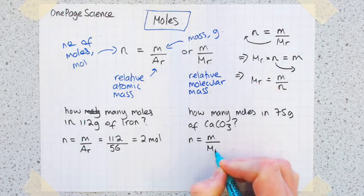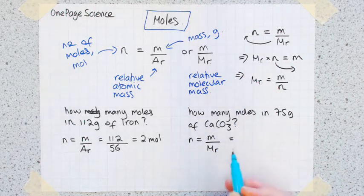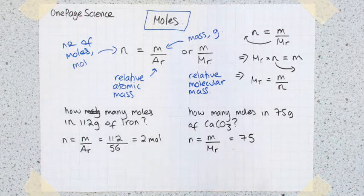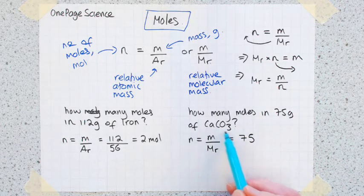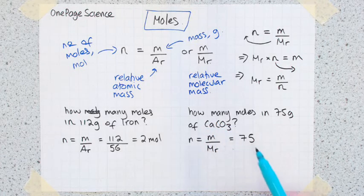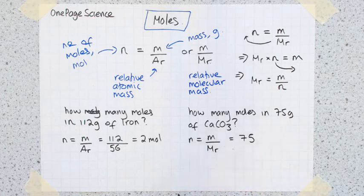So we can substitute in our numbers: mass is 75. Slight addition this time is that you need to work out the Mr for this compound. So you grab your periodic table, you look up all the different atomic masses. Do that as a separate calculation.